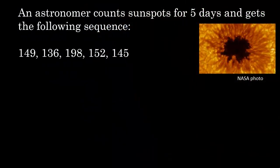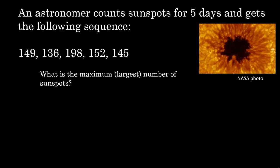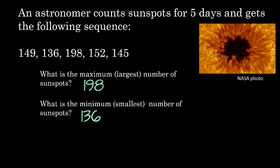An astronomer counts sunspots for five days and gets the following sequence. What is the maximum or largest number of sunspots? What I'm looking for is the largest number in my sequence, and that's 198. What is the minimum or smallest number of sunspots? We're looking for the smallest number in our sequence. That's 136.